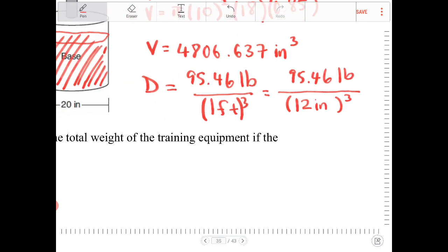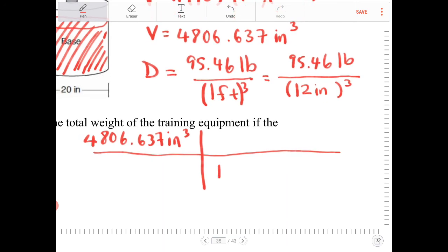So I am going to take my volume information, which is 4806.637 inches cubed. And I want the inches cubed to cancel and I want my final units to be in pounds. So the 12 inches cubed will be in the denominator, and the 95.46 pounds will be in the numerator. So you can see here the inches cubed will cancel. We are no longer going to have inches cubed. If I distribute the cube there, I'll have 12 cubed inches cubed. That's what it means to have 12 inches multiplied by itself three times. I'm going to end up with 12 cubed inches cubed. So the inches cubed will cancel, and the only units I'm going to be left with is in pounds.